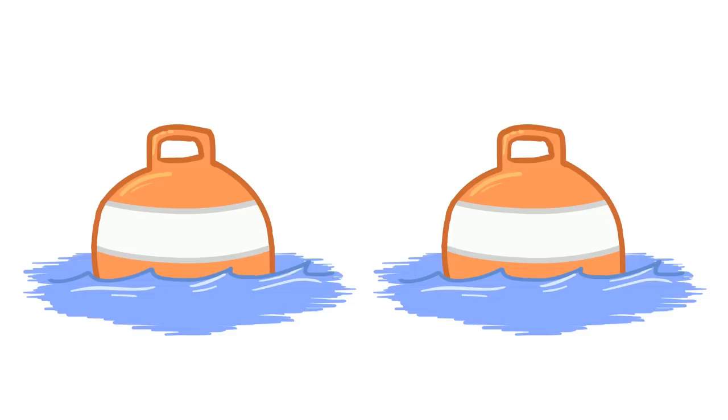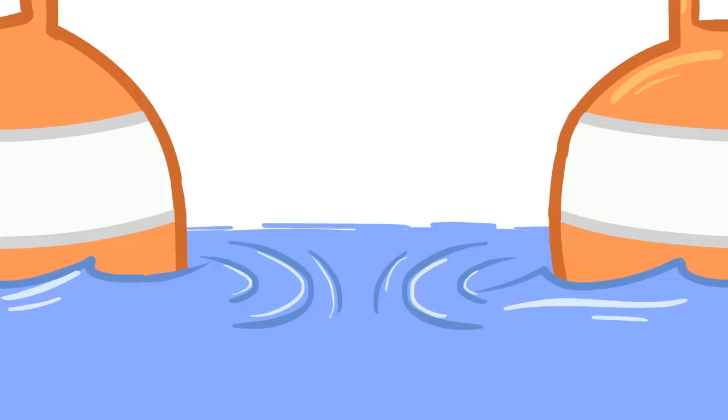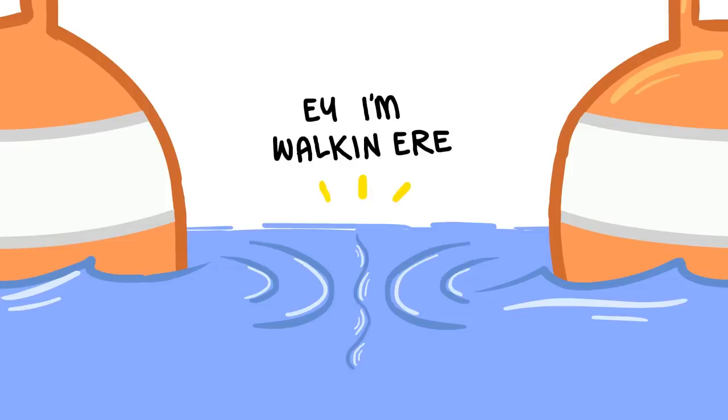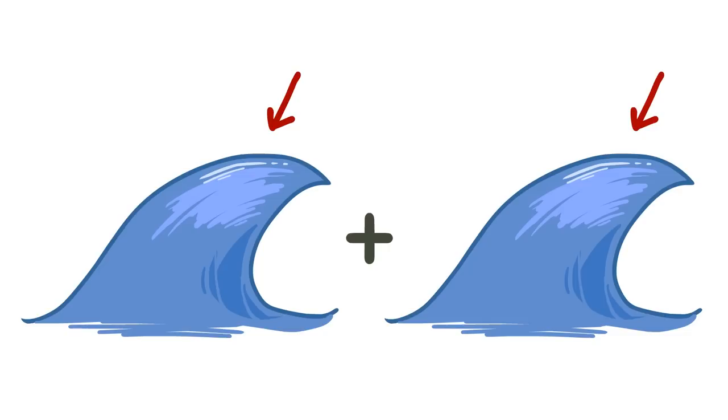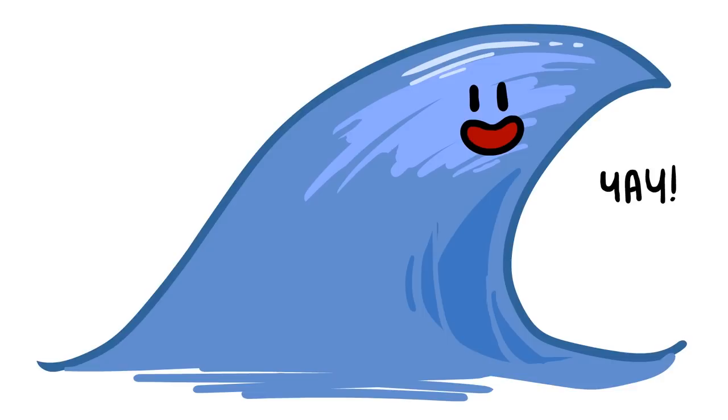Think of two buoys bobbing up and down in the water. As the waves spreading out from these buoys hit each other and overlap, they interfere with each other. If the peak of one wave hits the peak of another, they'll amplify and become a bigger wave.